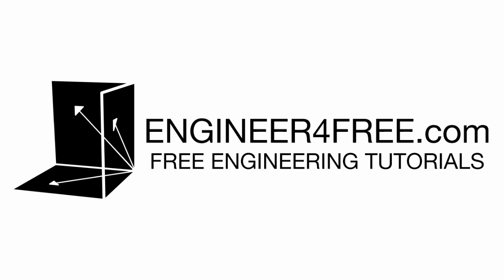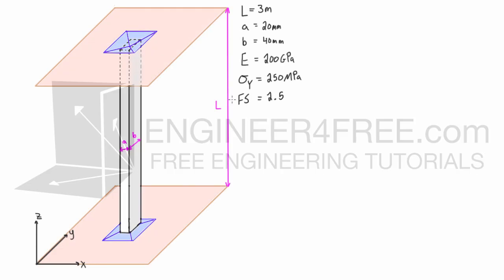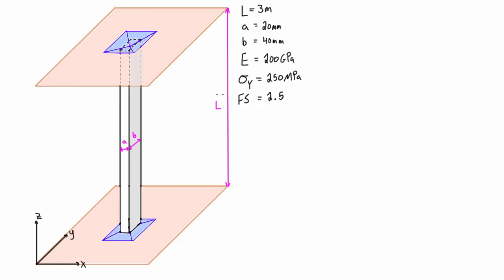Welcome back. In this video we're doing an example problem for column buckling. We want to figure out the critical load and the allowable load based on our factor of safety, checking against buckling. This column can buckle in two directions, so we have to check both. We also want to make sure the material won't yield before it buckles. We have a three-dimensional column here.